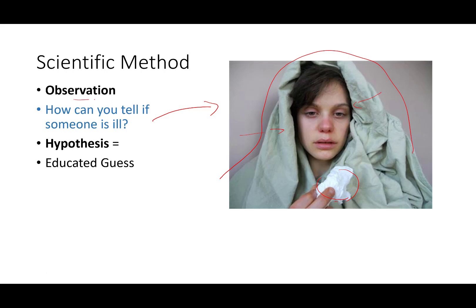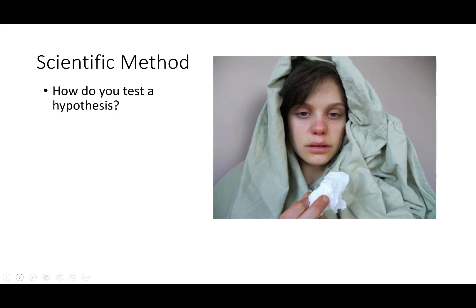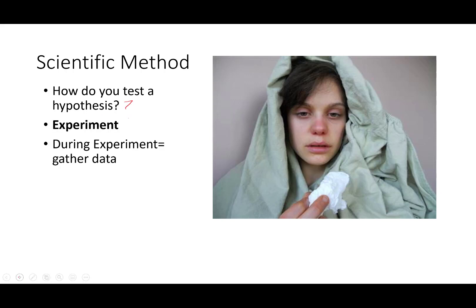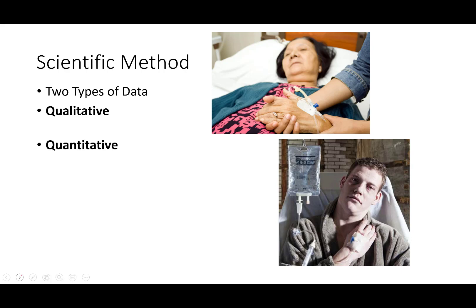We take all of our observations and follow that up with a hypothesis. The definition of a hypothesis is an educated guess — we have background and knowledge, and based on that we make an educated guess. To test a hypothesis, you run an experiment. During an experiment, you always take data. Data comes in two different types, and I want you to know these words — they are fair game on our first quiz.